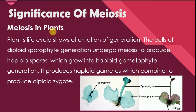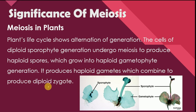Let's see the significance of meiosis in plants. Plants' life cycle shows alternation of generation. When studying sexual reproduction in plants, their life cycle shows alternation of generation, meaning they have two generations: one is the sporophyte generation and another is the gametophyte generation. The sporophyte generation is called the spore-producing generation and the gametophyte generation is called the gamete-producing generation. The cells of diploid sporophyte generation undergo meiosis to produce haploid spores, which grow into the haploid gametophyte generation that produces haploid gametes, which combine to produce a diploid zygote.